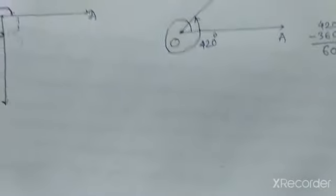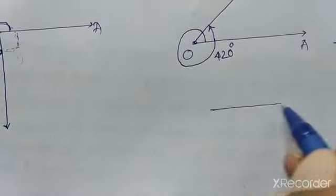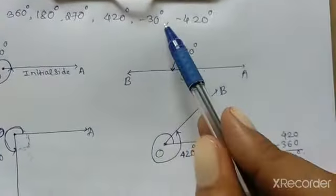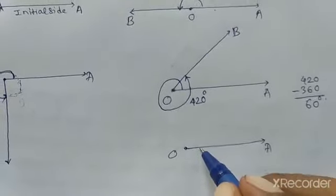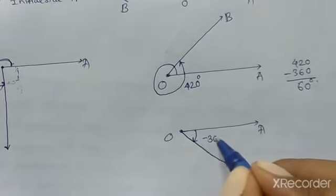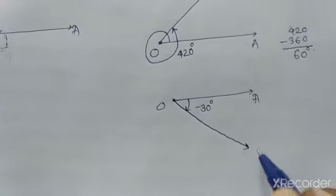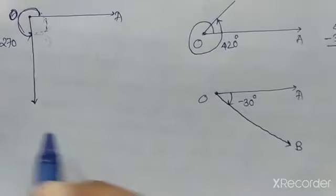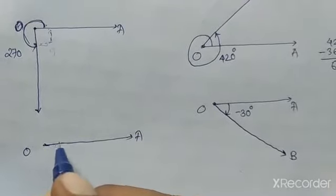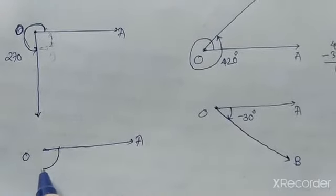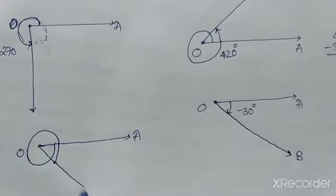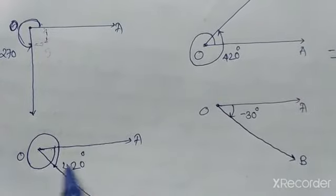For negative angles: to draw −30 degrees, with initial side OA, since the angle is negative we rotate in the clockwise direction. So in the clockwise direction it will be at −30 degrees, labeled B. Similarly for −420 degrees: rotating clockwise, it completes 360 degrees and goes a further 60 degrees, giving a terminal side counted as −420 degrees.